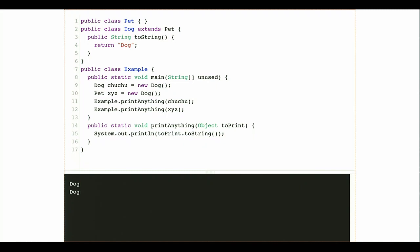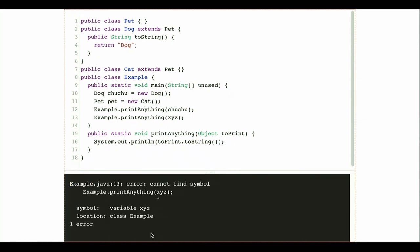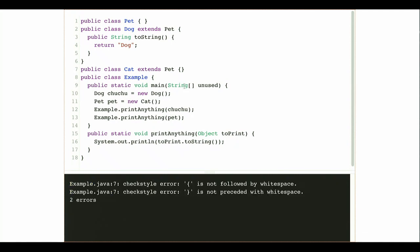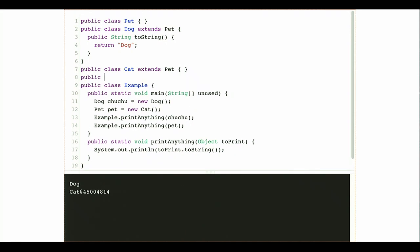That Pet reference variable can store a reference to anything that extends Pet. I can store a Cat, I can store a Ferret — anything that can behave like a Pet, meaning anything that extends Pet or anything that descends from Pet. Because anything that descends from Pet can behave like a Pet, I can refer to it as a Pet. This is the concept of upcasting — Java allows me to refer to an object as one of its ancestors in the tree automatically.